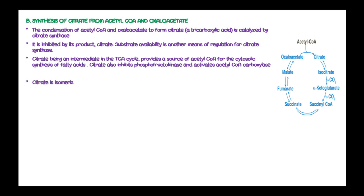We move to isomerization of the citrate which has been formed from acetyl-coenzyme A. Citrate is then isomerized to isocitrate by the enzyme known as aconitase.